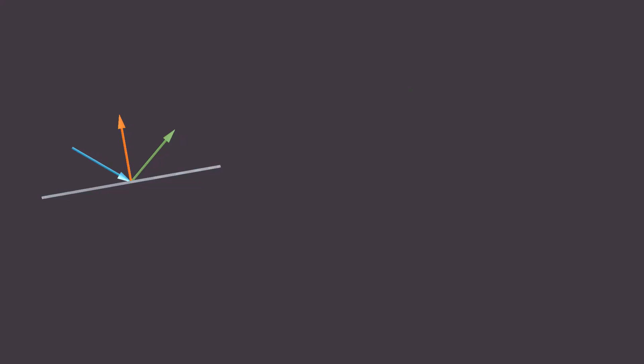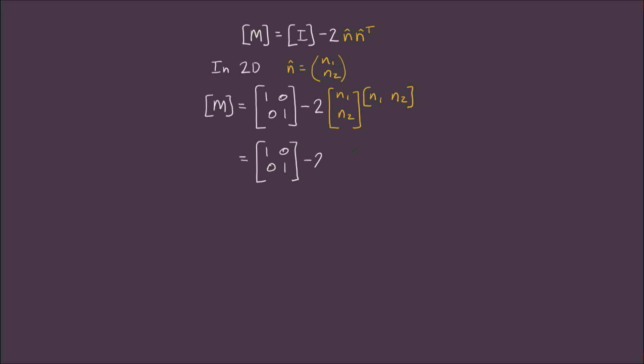Okay, but let's see what this mirror matrix actually looks like. Well, in 2D, the normal vector to our mirror will only have two components, which I'll call n1 and n2. The identity will hence also be a 2 by 2. And n and n transpose will look like this. Now we'll just do the matrix multiplication. Notice that n times n transpose will actually end up forming just another 2 by 2 matrix. We can sum these two matrices together to get the following mirror matrix. And we're done.